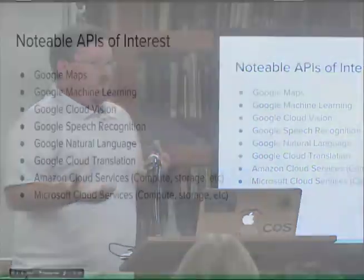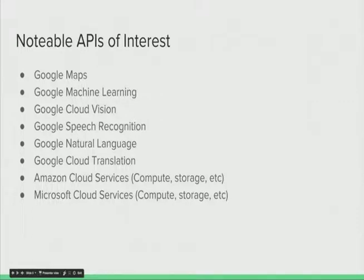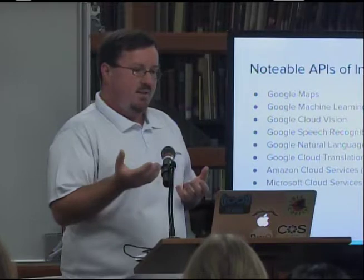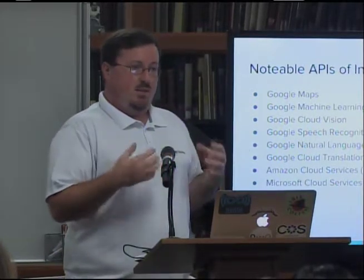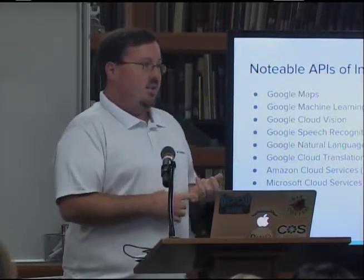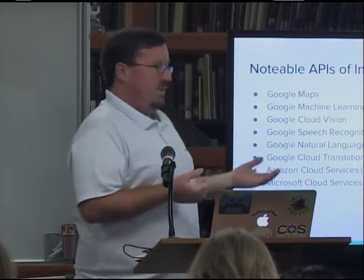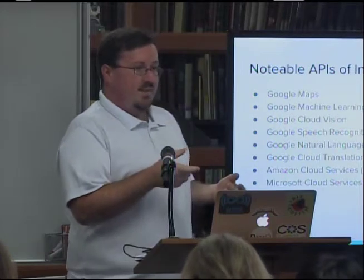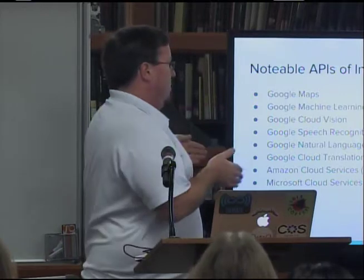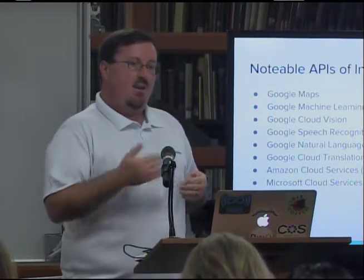Some notable APIs of interest for digital humanities: Google has pushed out a machine learning API that looks compelling. Google Maps is useful — we have collections here at the library with coordinates and we do Google map overlays. Cloud Vision lets Google software take apart images from different perspectives. Speech recognition and translation APIs mean that if you need documents translated, you can use basic scripts to connect to these APIs and have the translation done programmatically.